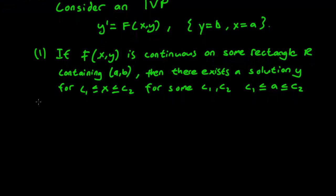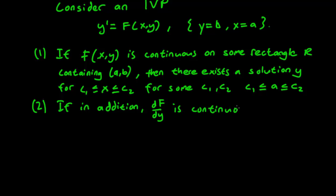This is where the second point comes in. The second point is if in addition the partial derivative of f with respect to y is also continuous in that r, then we have that y is unique on some c1 ≤ x ≤ c2, c1 ≤ a ≤ c2.